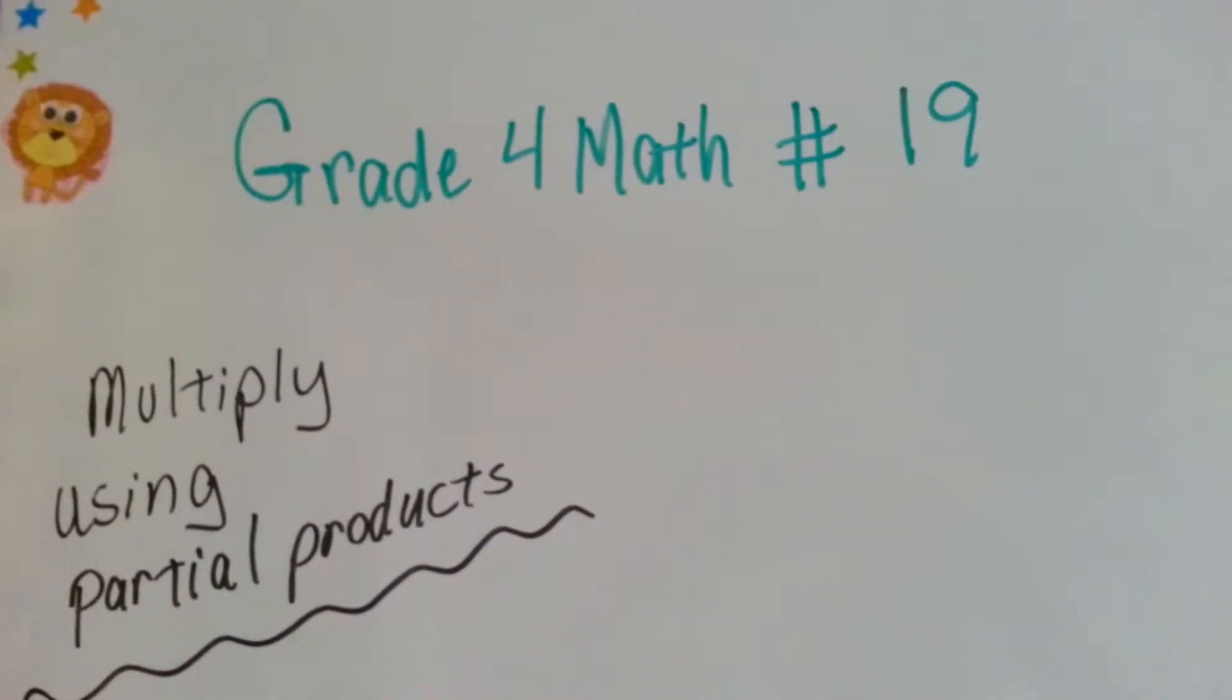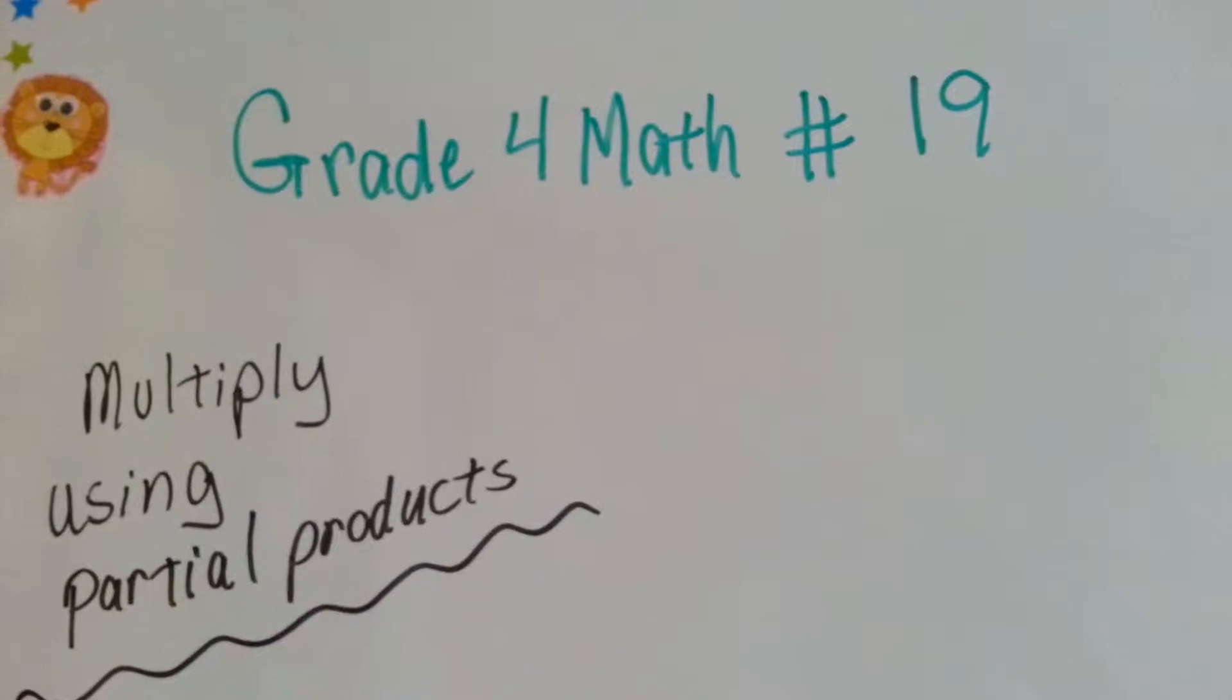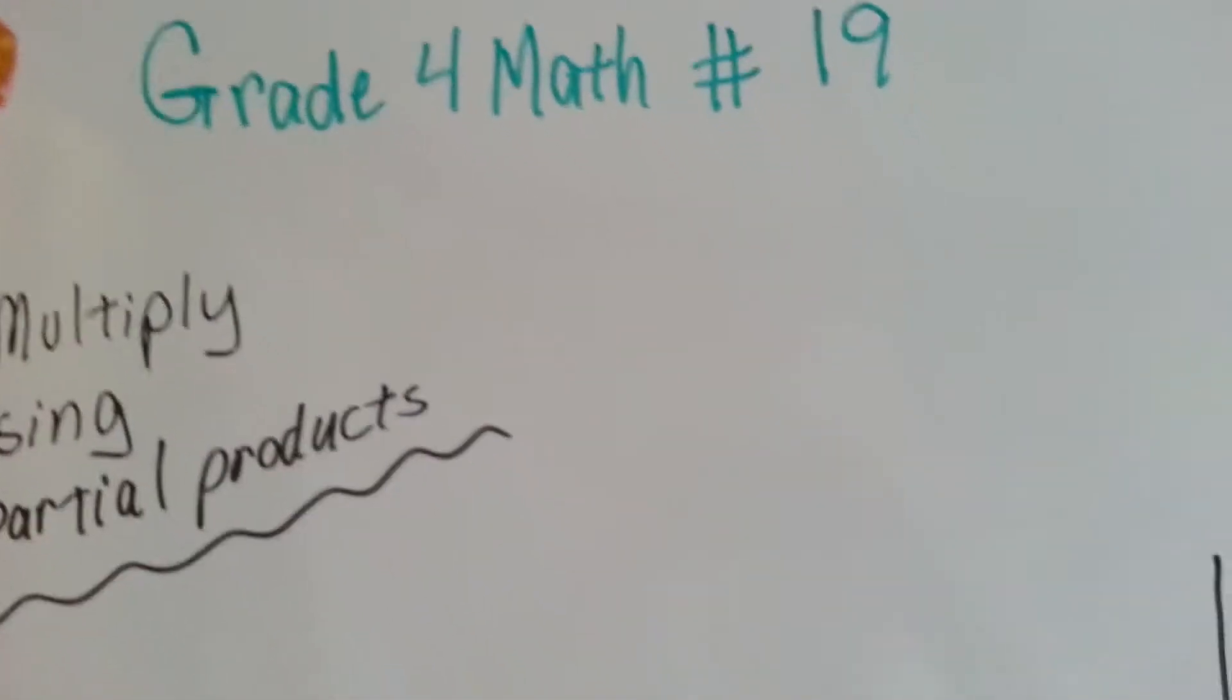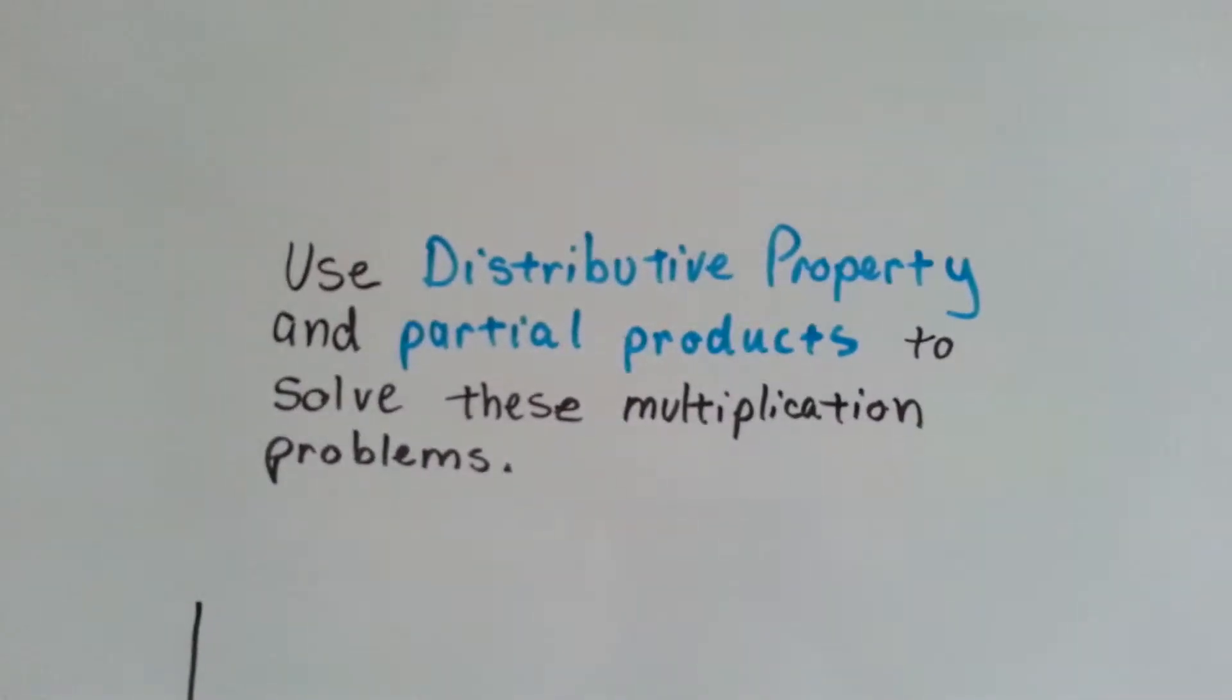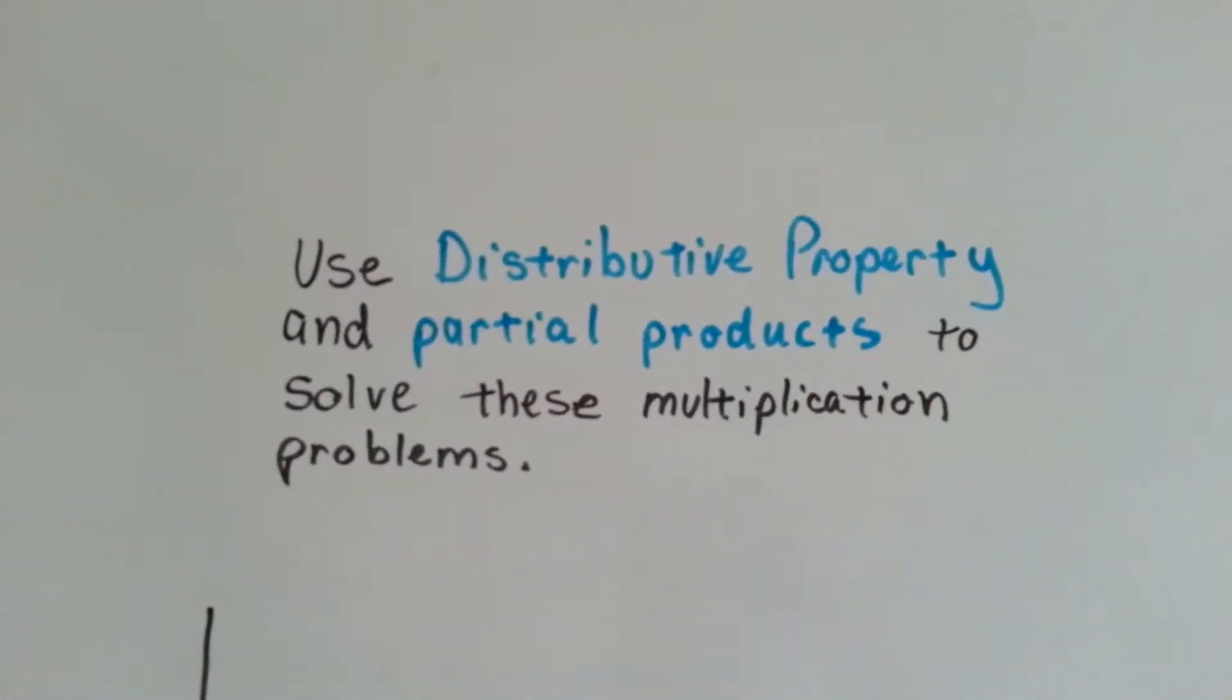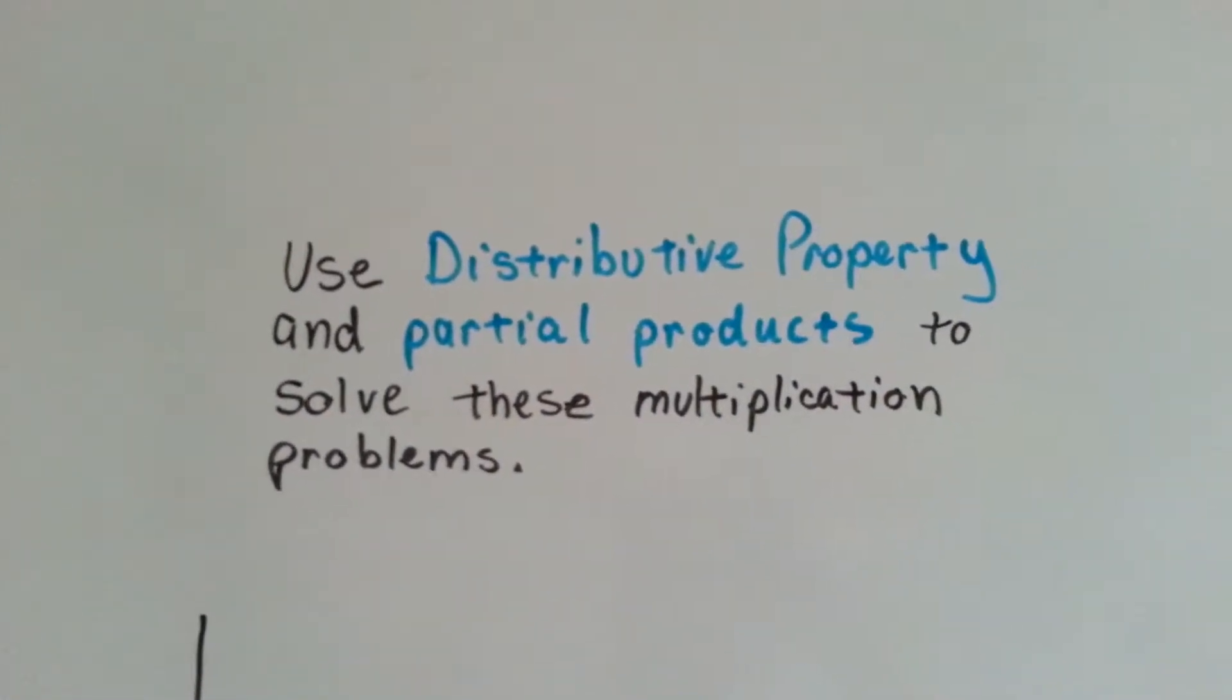Grade 4 math number 19, multiply using partial products. Now in this little lesson, we're going to use the distributive property and partial products to solve these multiplication problems.